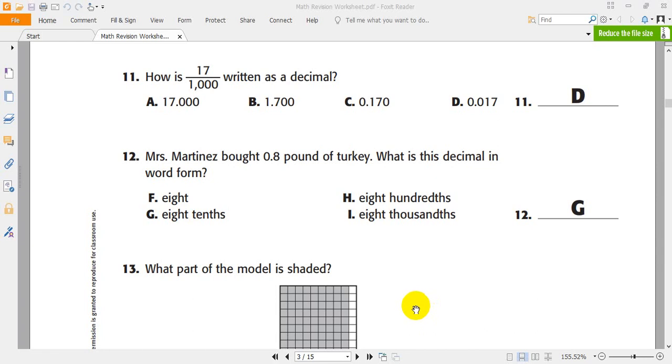Number 12. Mrs. Martins bought 0.8 pound of turkey. What is this decimal in word form? So, in word form, 0.8, we can say that it's equal to 8 tenths. 8 tenths.